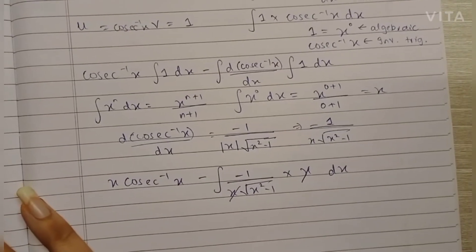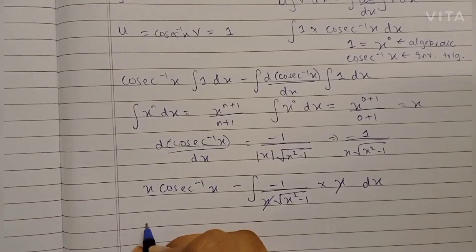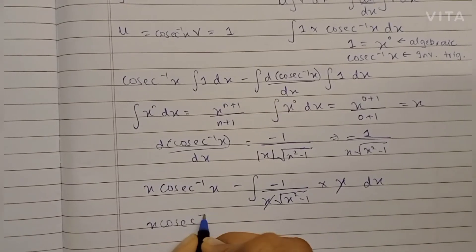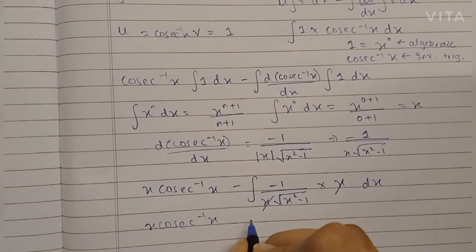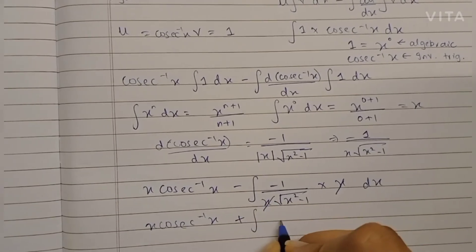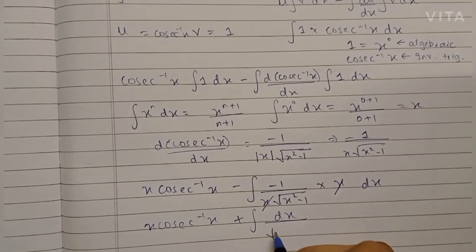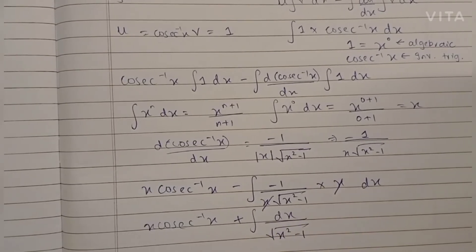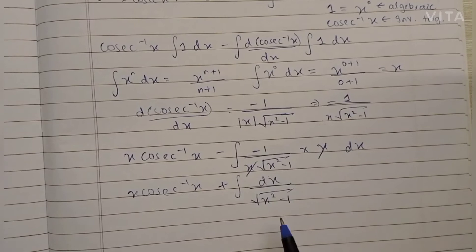So we are left with x·cosec⁻¹(x) minus—minus minus 1 because we can take minus 1 outside because it's a constant—so we have dx upon √(x² - 1). Now we have the formula for integration of 1 upon √(x² - 1).